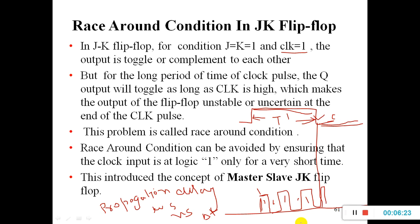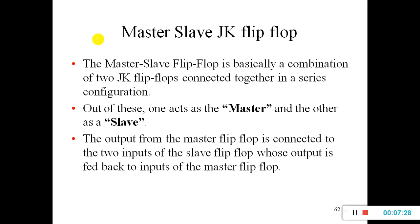The race around condition can be avoided by ensuring the clock input is at logic one only for a short time — by minimizing the period of the applied clock pulse. If the clock time equals delta, the problem can be sorted out, but this is generally not practical. The other important solution is to introduce the concept of the master-slave JK flip-flop.